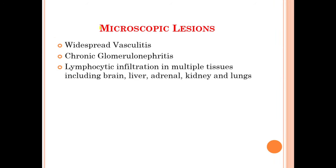Moving on to the microscopic lesions of LCM infection, you may observe widespread vasculitis, chronic glomerulonephritis, and lymphocytic infiltration in multiple tissues including the brain, liver, adrenal glands, kidney, and lungs.